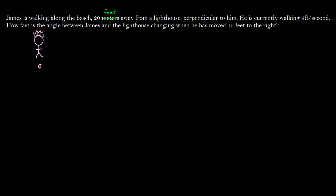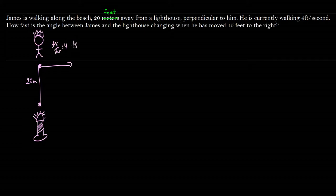And he is 20 meters away from a lighthouse, which I have a feeling this is going to be drawn really inappropriately. So I'm going to try not to. You know what? That's totally not appropriate, but I'm going to leave it like that anyway. And this is 20 meters away from James and he is walking to the right at 4 feet per second. So dx/dt is equal to 4 meters per second, feet per second, feet per second.